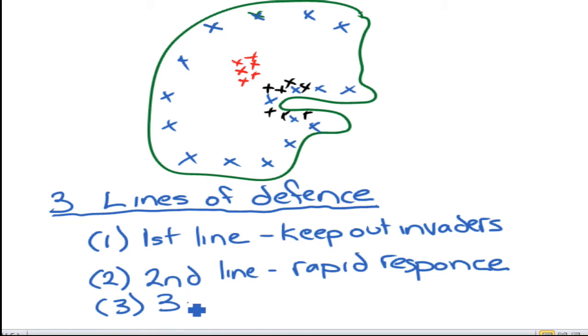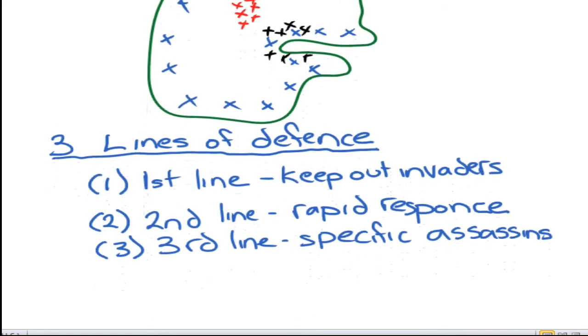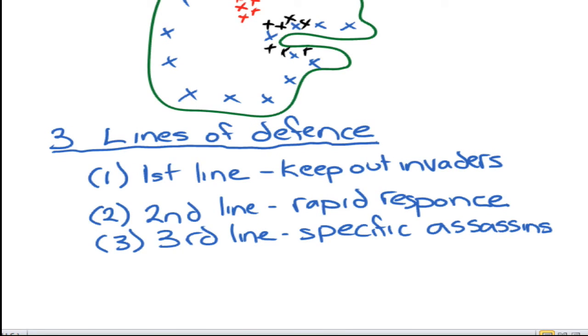Some of you might have wondered, why do I only get chicken pox once? Why did I only get measles once? The reason is, your body has specific assassins that attack a specific disease. Now these specific assassins don't know what diseases are coming, so your body can't be prepared. When you catch a disease, you take seven to ten days on average to create an assassin for a disease.